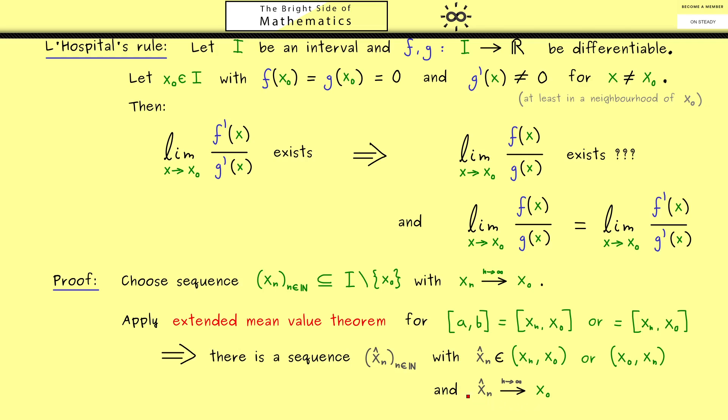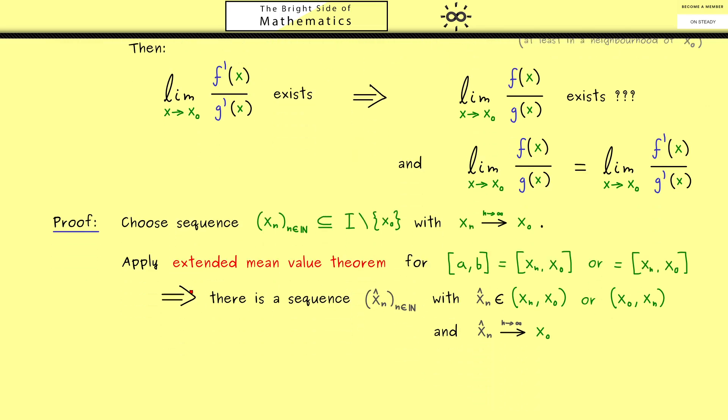Ok so this is very neat. But you see there is still one important part of the extended mean value theorem missing here. Namely we have that this strange mean slope given by the two functions f and g is equal to the quotient with the derivatives f'(x̂ₙ) divided by g'(x̂ₙ). And please note here on the left hand side we have the boundary points of the interval. So xₙ and x₀ and then it does not matter in which order they occur.